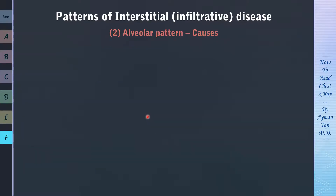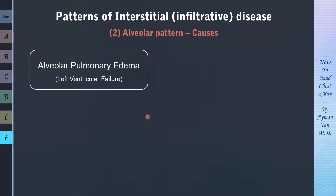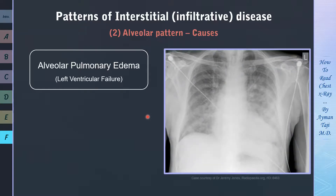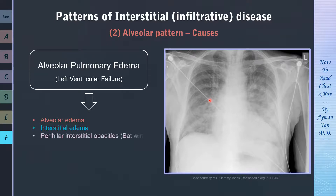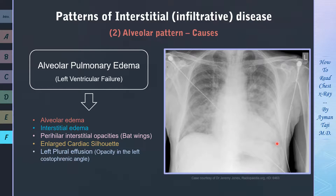If you remember from the previous lecture, when the left ventricle is unable to pump sufficiently, fluid starts to accumulate abnormally in the extravascular compartments of the lung — first in the interstitium, causing interstitial pulmonary edema. Then if fluid continues to accumulate, interstitial edema becomes alveolar edema and we see fluffy, cloud-like and hazy opacities. In this case, we see both cloud-like and reticular opacities, indicating both alveolar and interstitial edema features, along with perihilar opacities or bat wings, an enlarged cardiac silhouette, and left pleural effusion visible as an opacity in the left costophrenic angle.